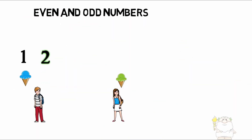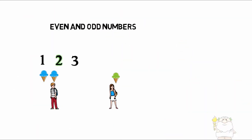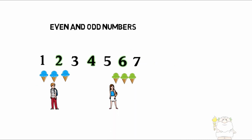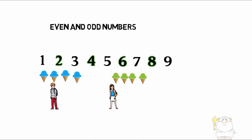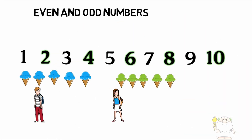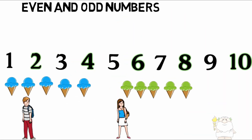two cones is even, three is not, four is an even number, five is odd, six is even, seven is odd, eight is even, nine is odd, and ten is even because it can be equally divided by two.